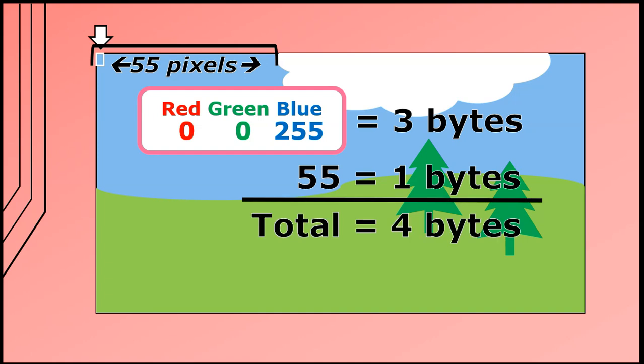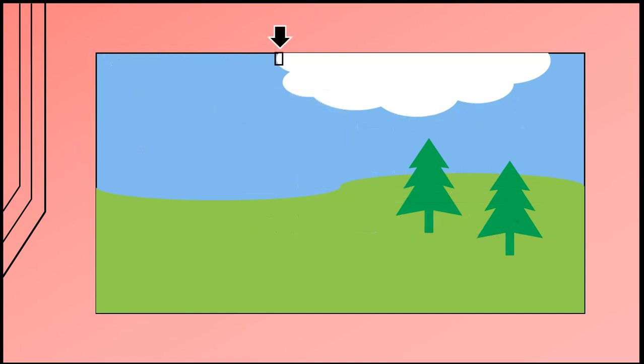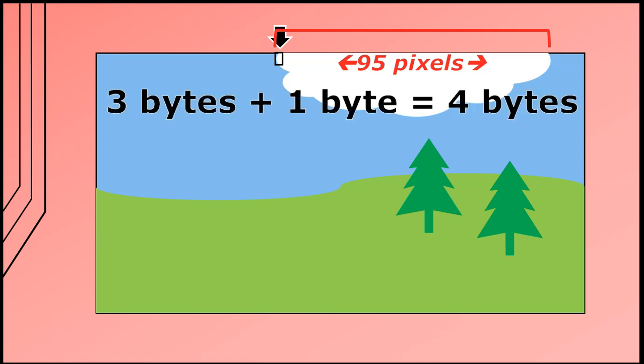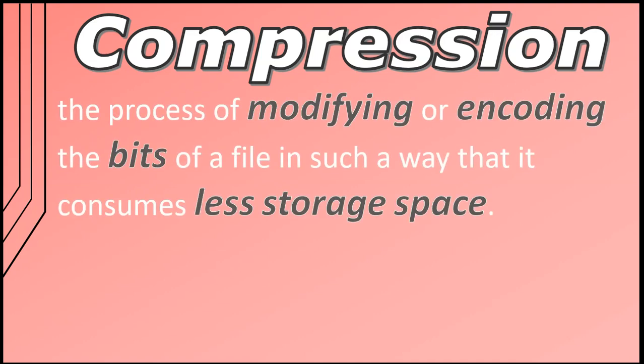Then we can store the value of the next pixel in the cloud and the number of times that pixel must be repeated until we get a new, different colored pixel. This again takes only four bytes of information. This is a very simple explanation of how compression could possibly work. Compression is the process of modifying or encoding the bits of a file in such a way that it consumes less space.